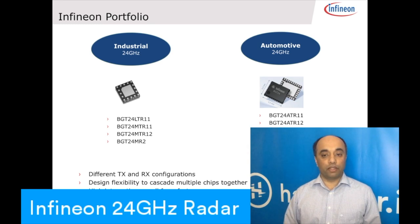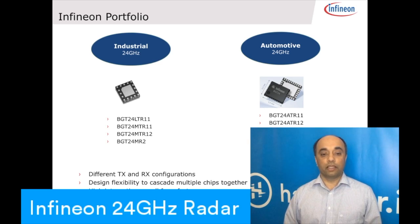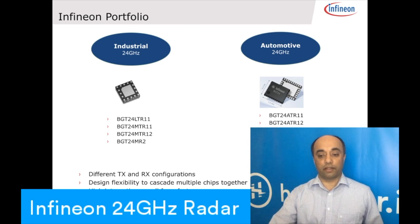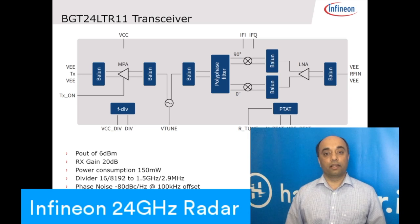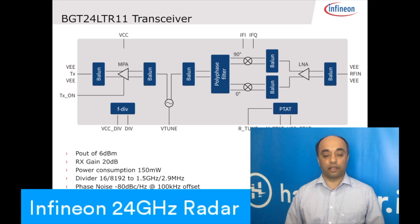We have different configurations available with our transceivers: a one transmit, one receive transceiver, or a one transmit, two receive transceiver. We can also sync multiple chips together. For example, if you need better angular resolution, you can connect one chip to another via LO synchronization. All of our chips are highly integrated, which gives a smaller form factor to the end system solution. Our portfolio can also be found on infineon.com/24GHz. One of our latest chips is the BGT24LTR11, one of the smallest chips in the world at 24 GHz, with a complete transmit and receiver integrated inside it.